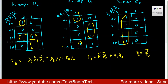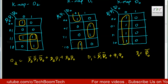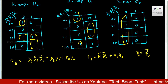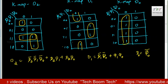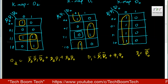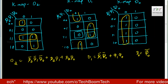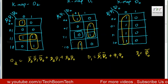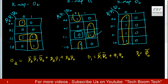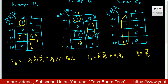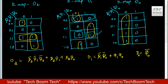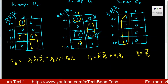Now we are entering all the inputs and doing the K-maps for D2, D1, and D0. On the K-map table, the variables are Q2, Q1, Q0. The first value is 1, 1, 1. One cell is 110 and another cell is 111. We fill in the values to get the simplified Boolean expressions for D2, D1, and D0.